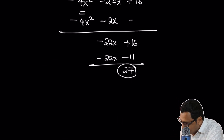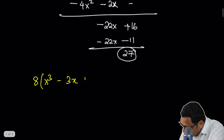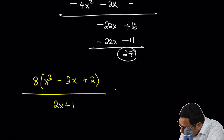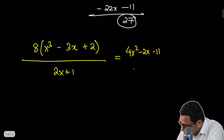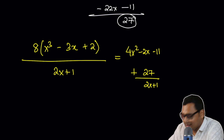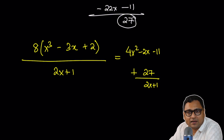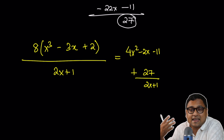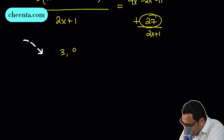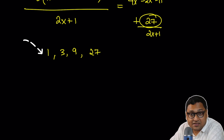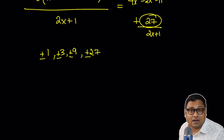So the remainder is 27. Writing it out: 8(x³ - 3x + 2) divided by (2x + 1) equals the quotient 4x² - 2x - 11, plus 27/(2x + 1). We just need to find when 27 is divisible by 2x + 1. Remember, x is an integer — positive or negative. The divisors of 27 are 1, 3, 9, 27 and their negative counterparts.